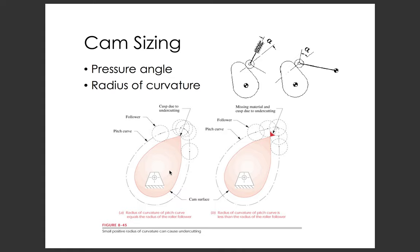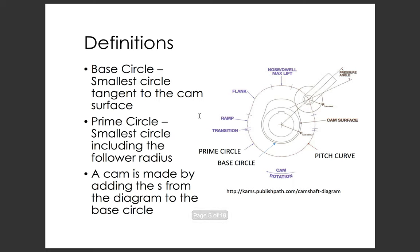A few more definitions. The base circle is the radius of the actual metal we're going to grind on the cam. The prime circle radius is a little different — it's the radius of the base circle plus the radius of the follower if we have a roller follower. So for a flat follower the prime circle and base circle will be the same. For a roller follower we generate the prime circle from our s-graph in our SVAJ diagram, and at each point perpendicular to the surface we subtract off the follower radius to get the actual metal we're going to grind.